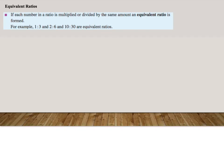Our next topic is equivalent ratios. If each number in a ratio is multiplied or divided by the same amount, an equivalent ratio is formed. For example, 1 to 3, and 2 to 6, and 10 to 30 are all equivalent ratios. So you guys can see that the colon almost acts as an equal sign. However, unlike the equal sign, we can only multiply and divide by the same amount on different sides or on both sides.